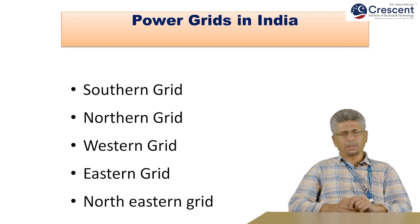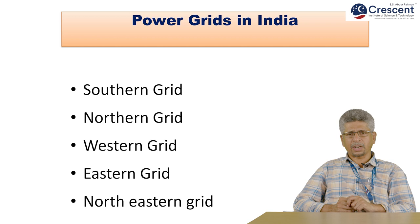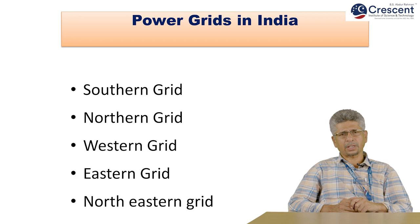Power grids in India: we have five numbers of power grids — Southern grid, Northern grid, Western grid, Eastern grid, and Northern grid. India has a single national grid where all five grids are interconnected.